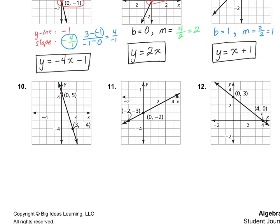Let's take a look at number 10. I see the y-intercept is at positive 5, so b equals 5. Now we need to find m. This is a little different because the graph is counting by 2s, so you have to be careful when counting slope. Going up 2, 4, 6, 8 — half of 8 would give us 9 — and over 1, 2, 3. So the slope is 9 over 3, which simplifies to 3.